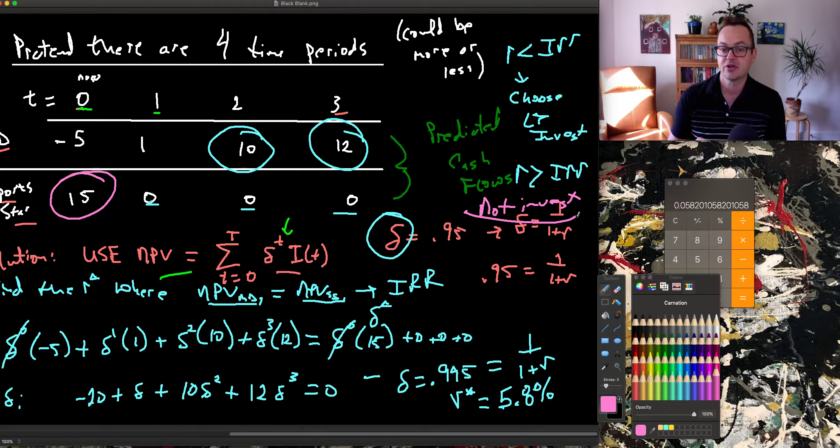So if I had a discount rate of something, say like 20%, instead of hovering around 5.3%, if it was 20%, it would indicate that I'm very impatient. I'm not going to wait around. I'm going to take this immediate cash flow. So I would choose to be a sports star.